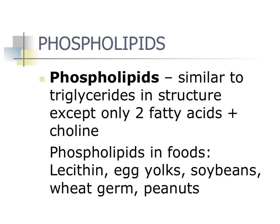Phospholipids are similar to triglycerides, except they only have two fatty acids instead of three. Instead of a third fatty acid, they have a phosphate group. Phospholipids are found in foods and in every cell of your body. If it's alive, it has phospholipids, because cell membranes are made of phospholipids. The root molecule is still glycerol with two fatty acids attached — one saturated and one monounsaturated — but the third position has a phosphate group and a choline molecule instead.